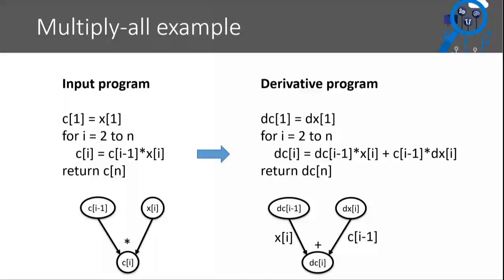Q: Is that why you had to write it in a funny way with the C_i accumulator array - so you remember all the intermediate values? A: Correct, that's one of the reasons. If you hadn't written it that way, you'd be somehow stumped. Q: How would you know that you were stumped - what property of the original program makes it necessary? A: You're anticipating a slide three from now.